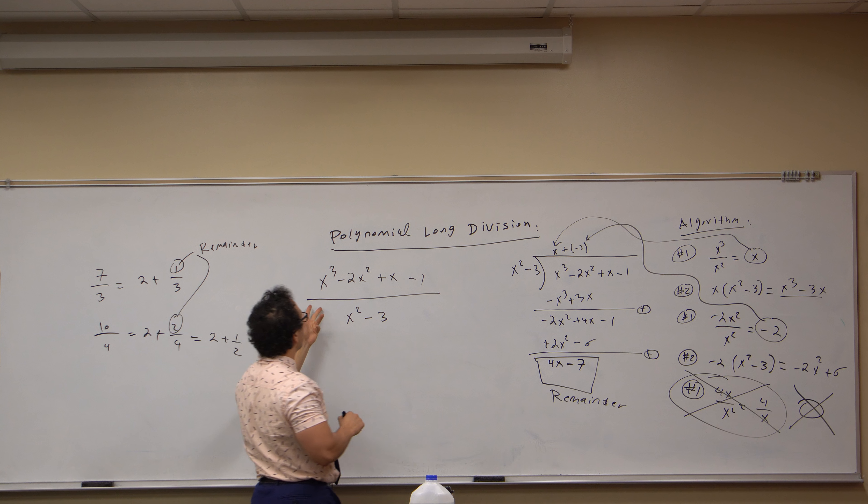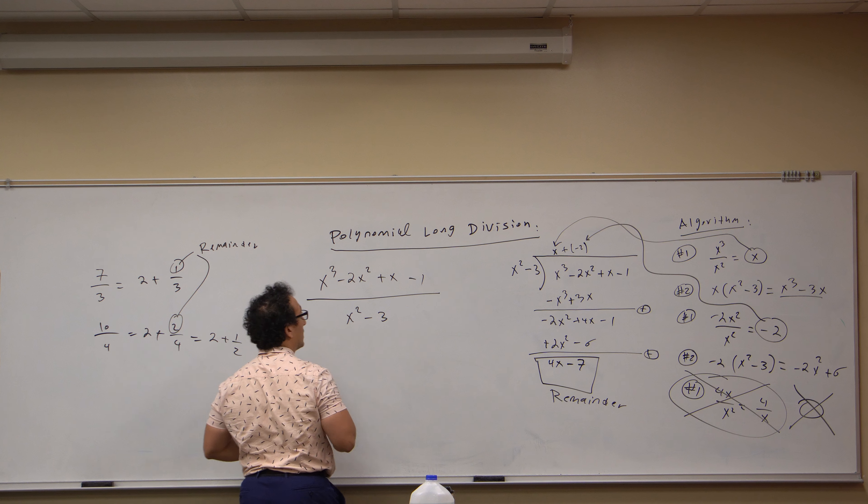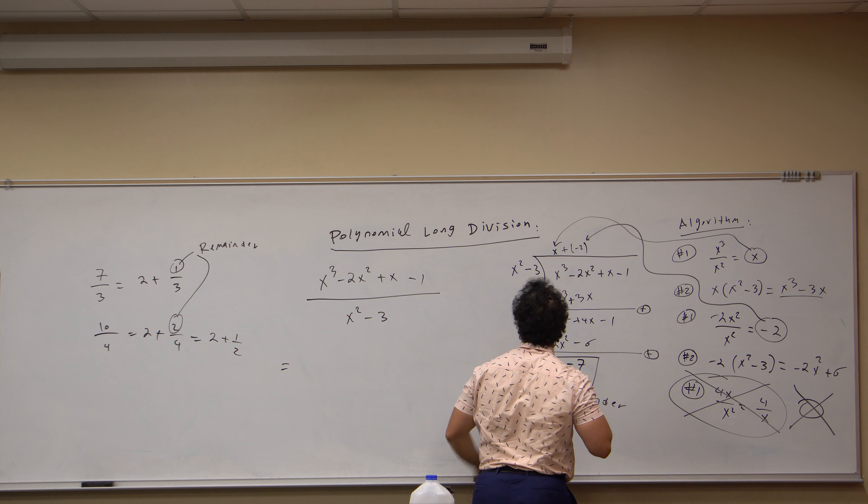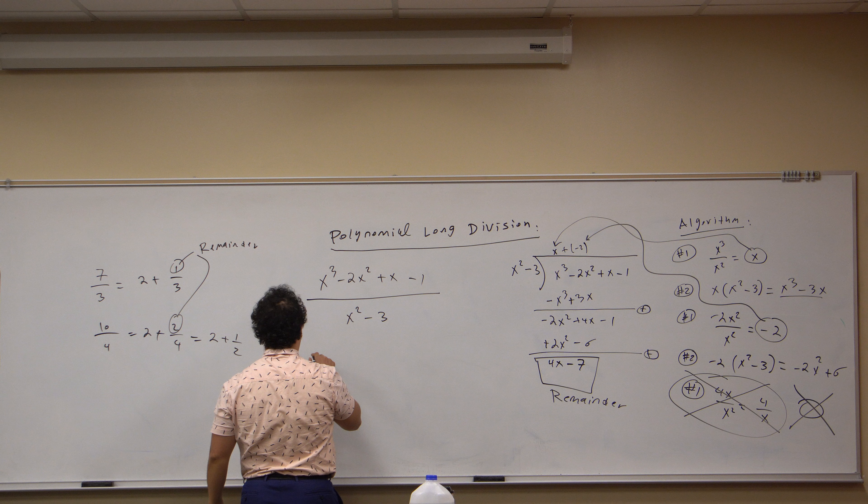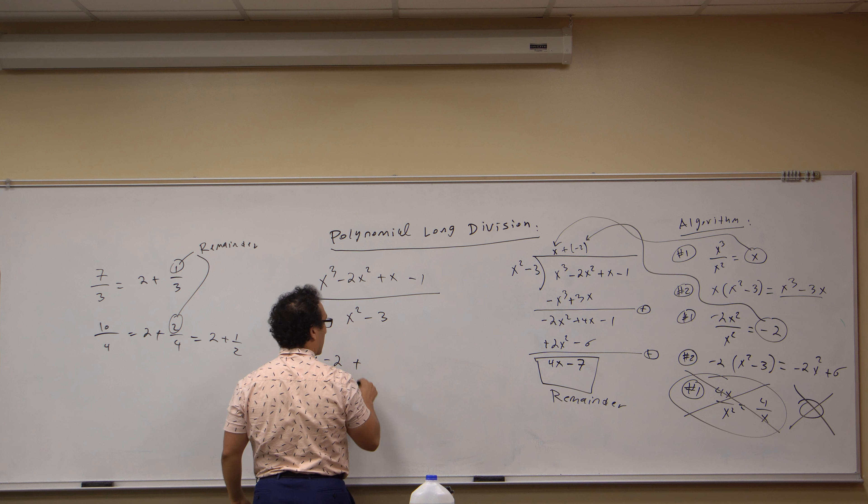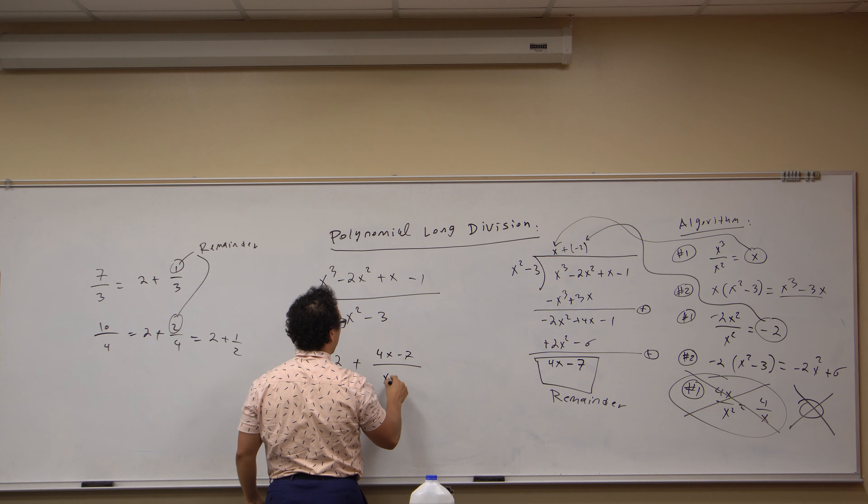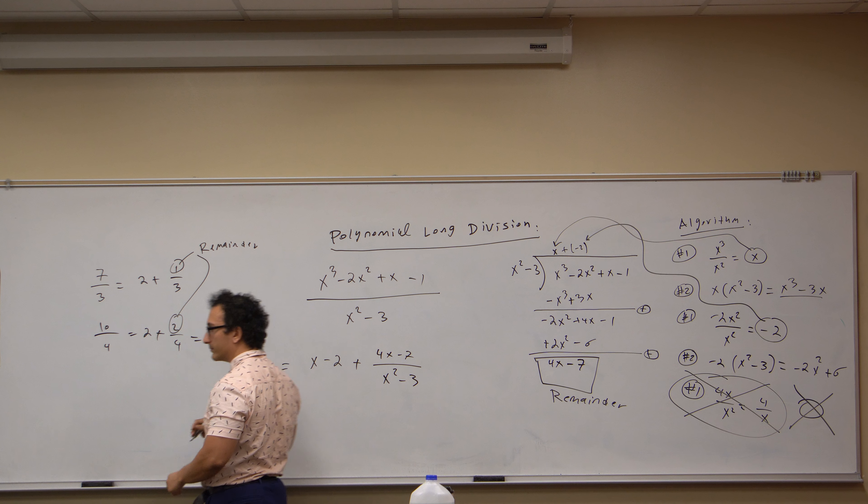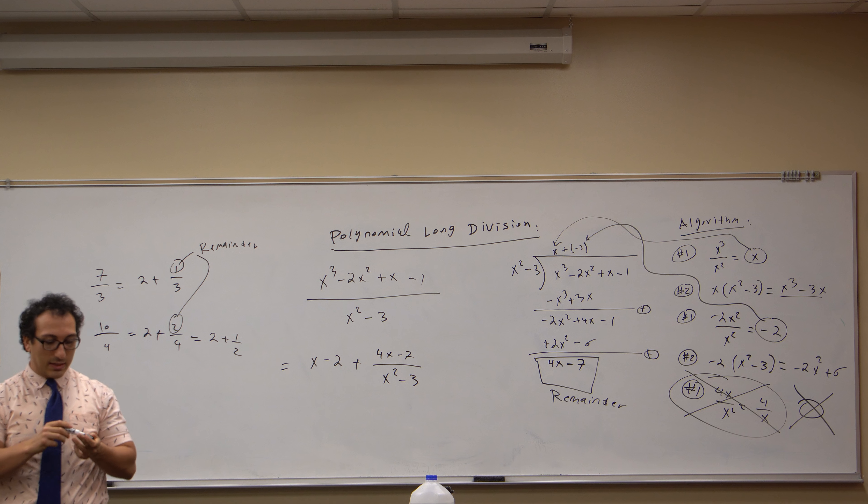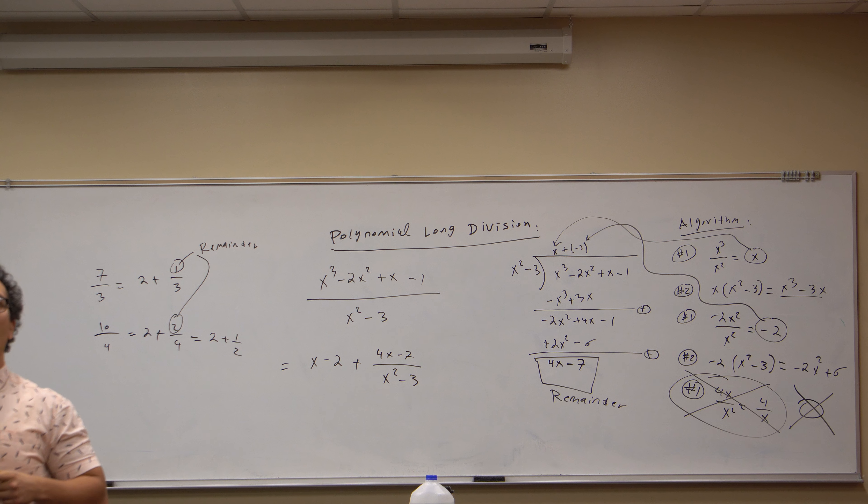So this is actually now equal to what's up here, this x minus two plus the remainder, this four x minus seven, all divided by x squared minus three. And this is a simple example of how to do polynomial division.